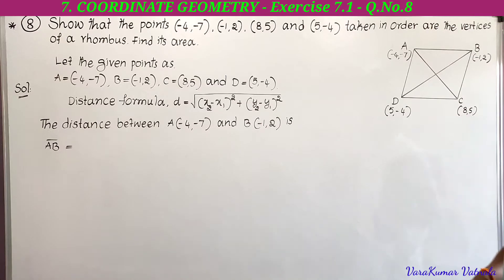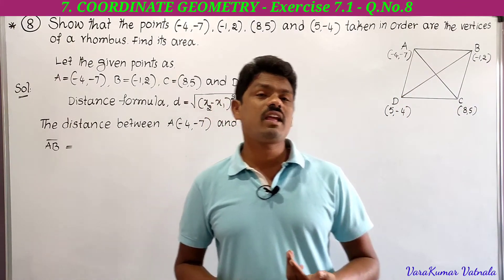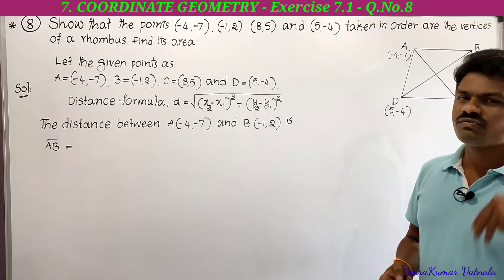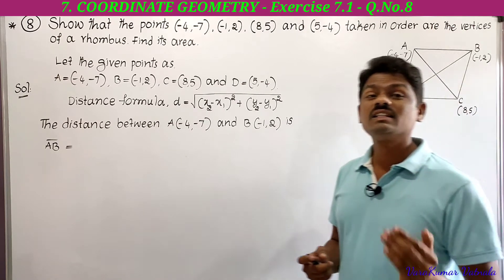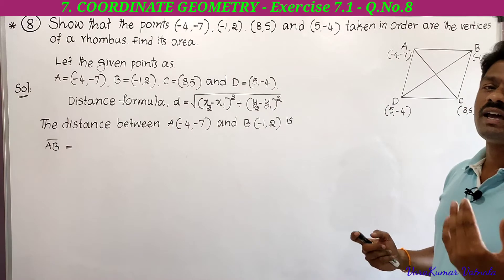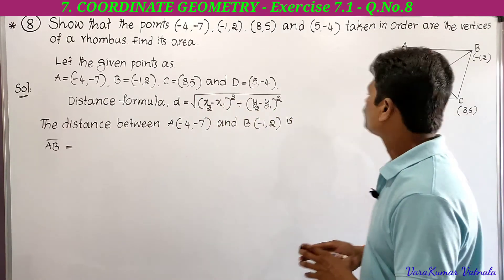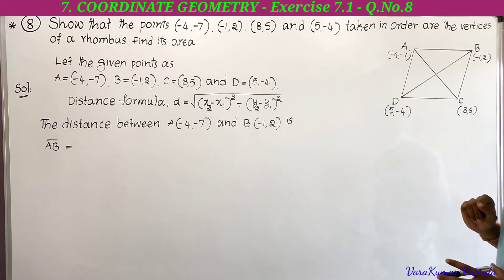To show the four points are vertices of a rhombus, we find the distances between the points. The key characteristic of a rhombus is that the lengths of all four sides are equal. Note that in a square, all sides are also equal, so we differentiate a rhombus from a square by finding the lengths of the diagonals. We need to find the lengths of all four sides first.